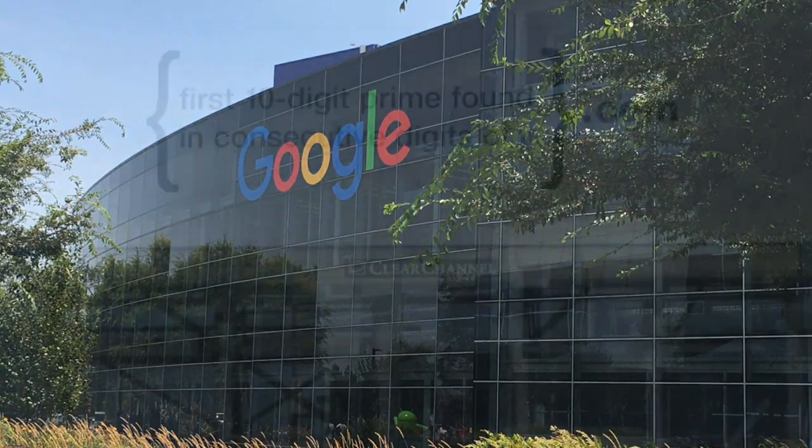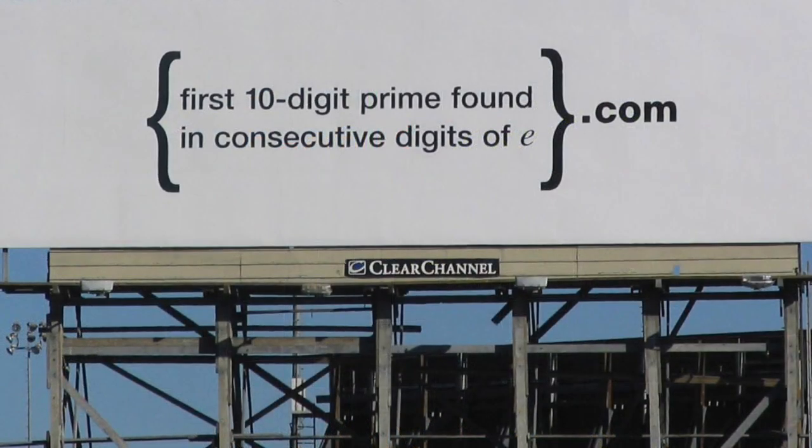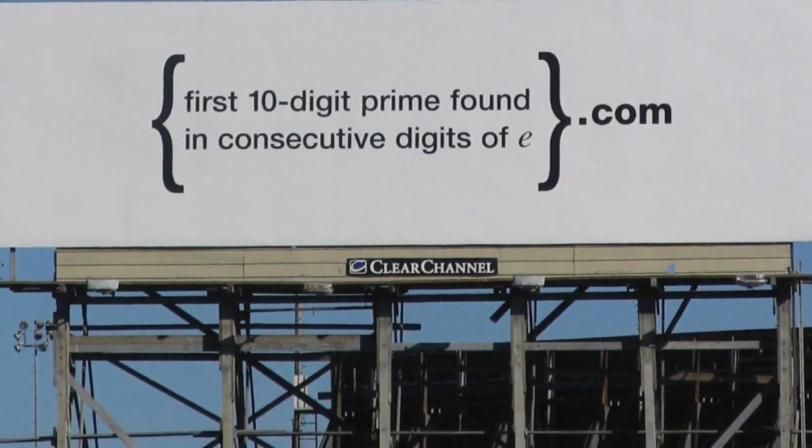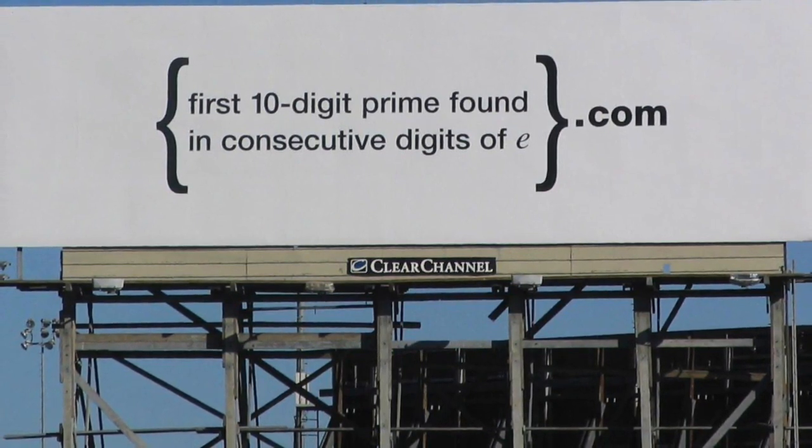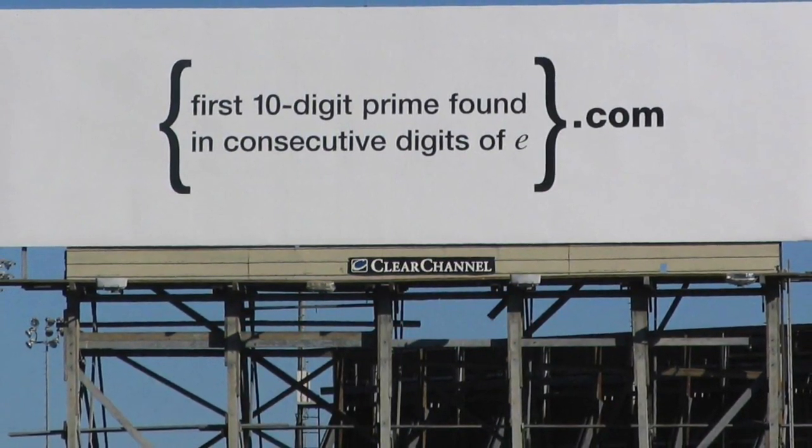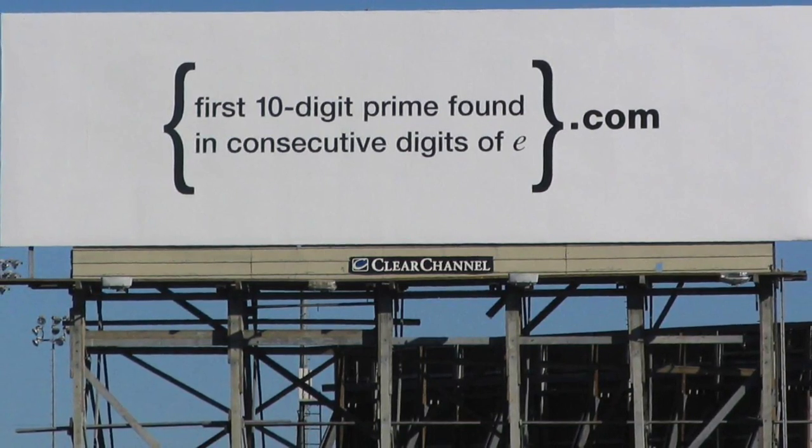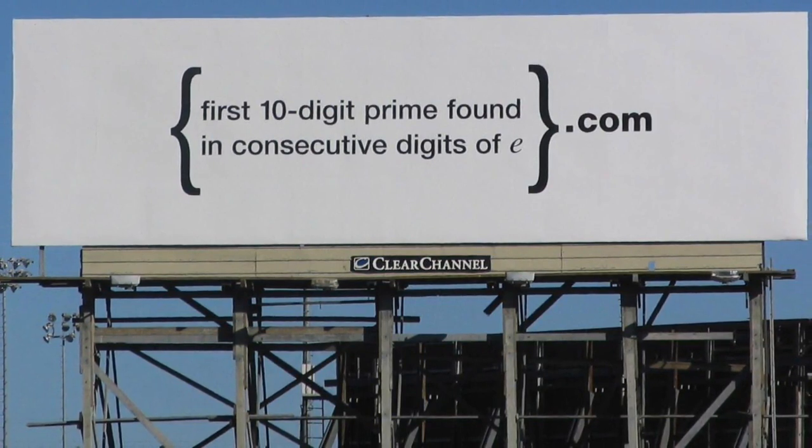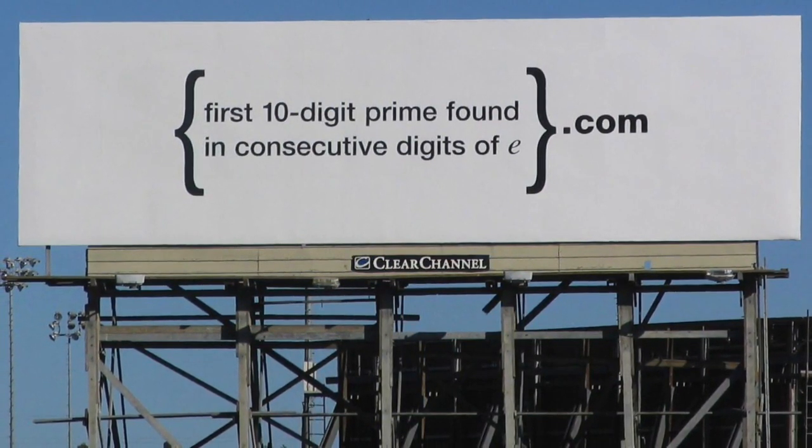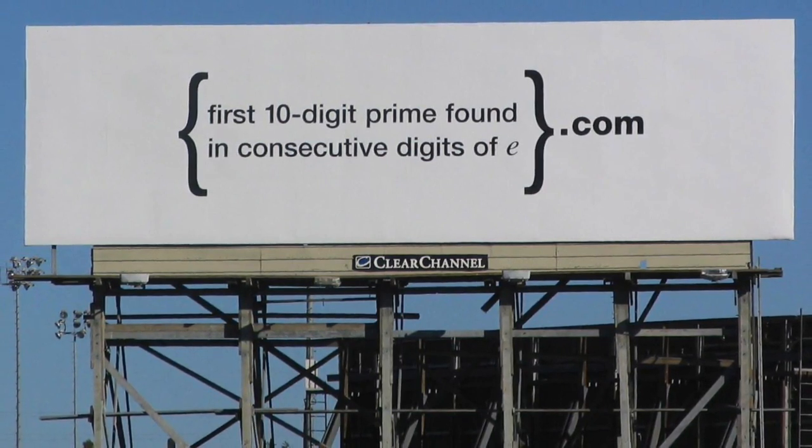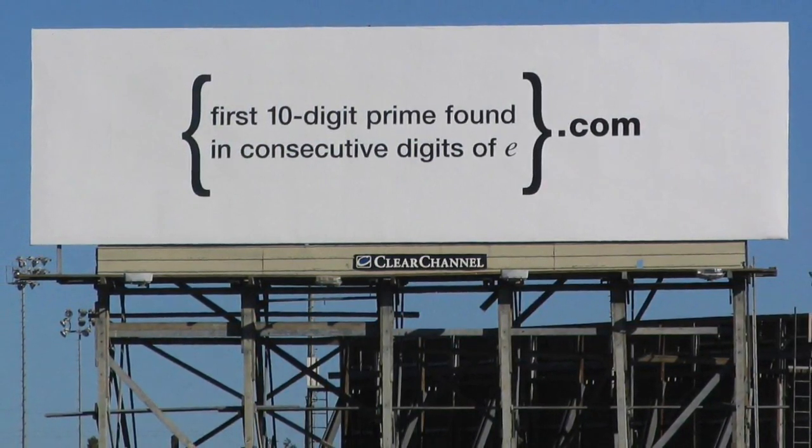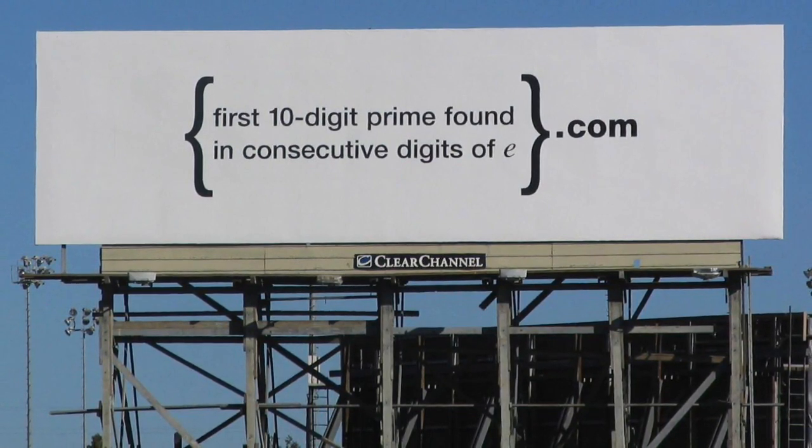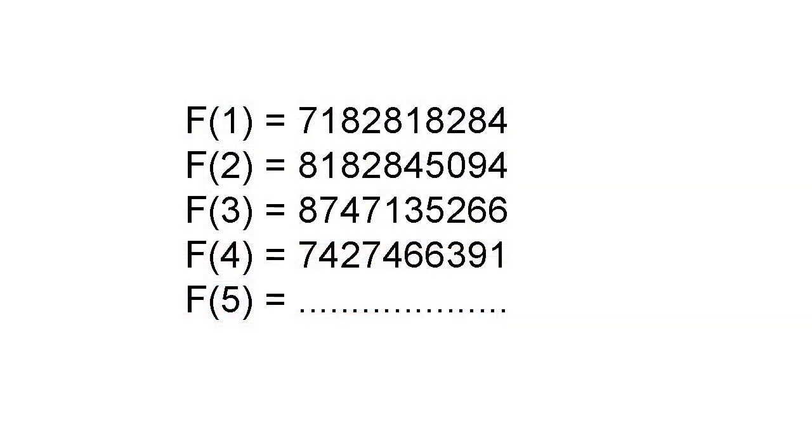Later, in a search for talented recruits, it put up billboards in Silicon Valley, Seattle, Austin, and Cambridge, Massachusetts, that read, First 10-digit prime found in consecutive digits of E.com. Anyone mathematically savvy enough to figure out the cryptically named website could visit it to find this message. Congratulations, you've made it to level 2. Go to www.linux.org and enter Bob's your uncle as the login, and the answer to this equation as the password, and I've put the equation on the screen here.